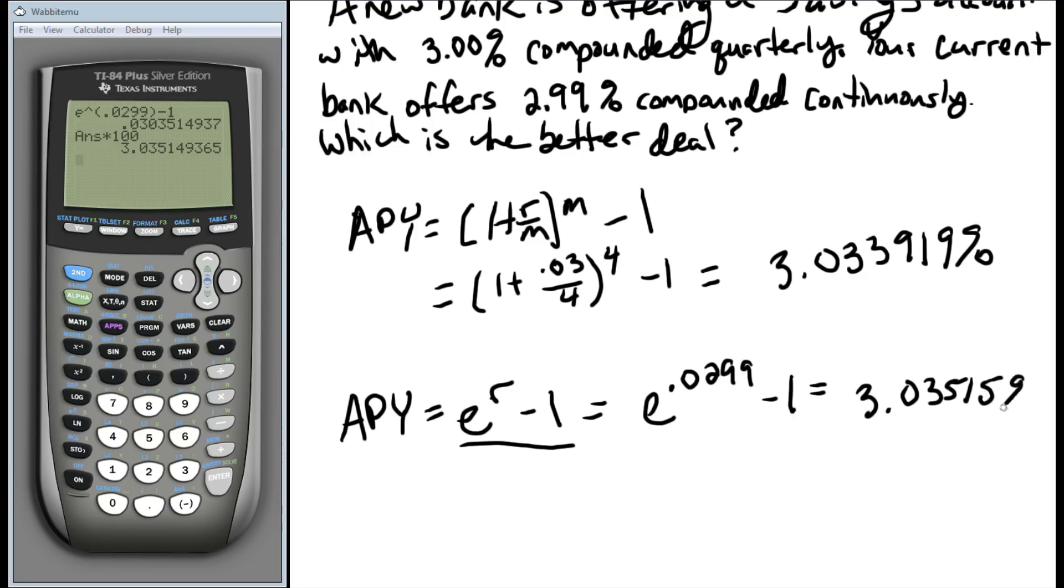And we can see really clearly right away that even though the 2.99% started off smaller than the 3%, just compounding it more often in the end wound up having a little bit more yield than the compounded quarterly. Thank you.